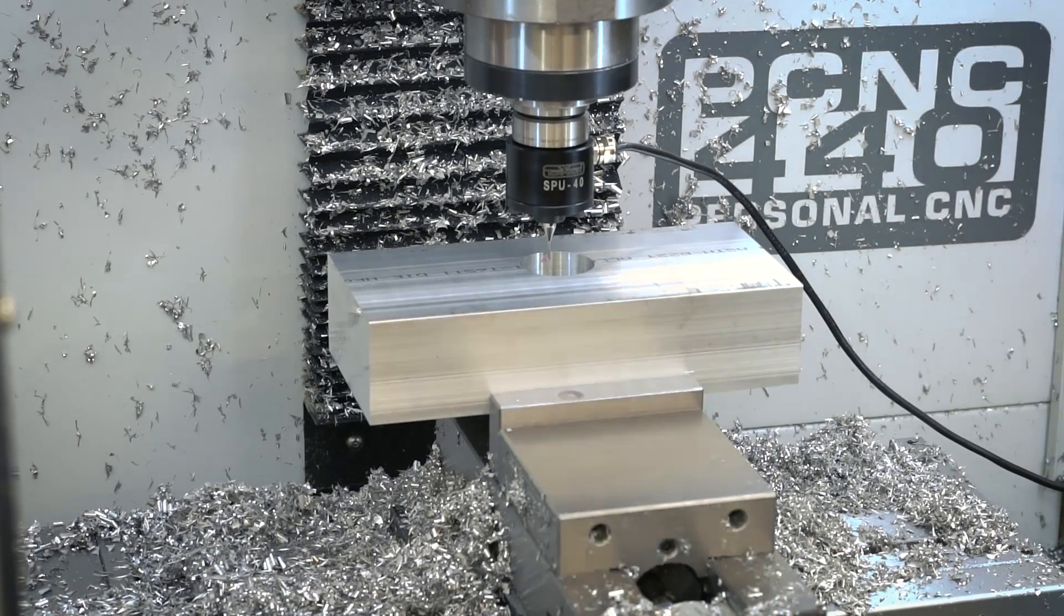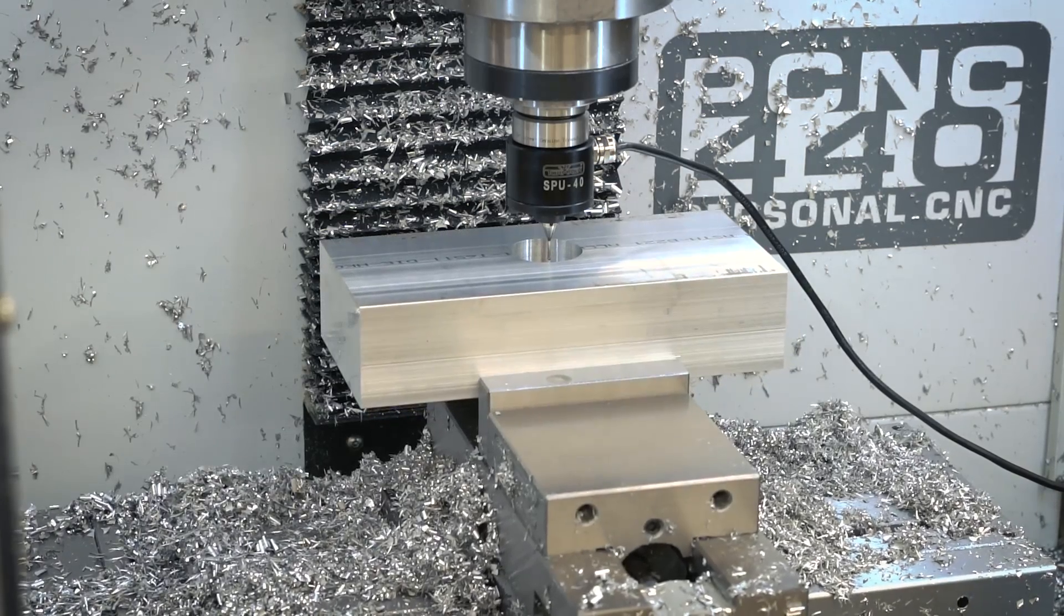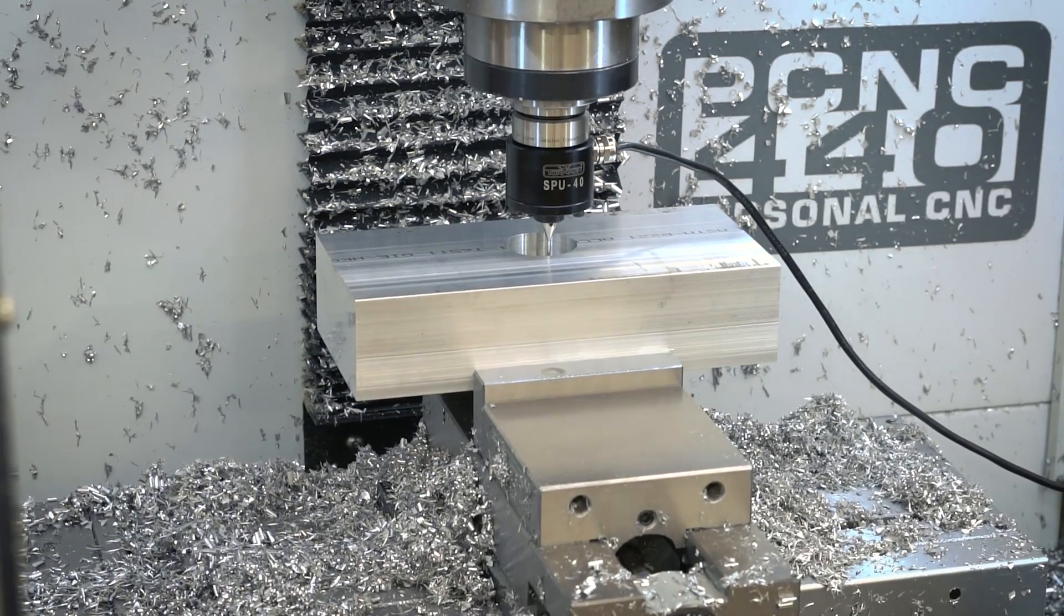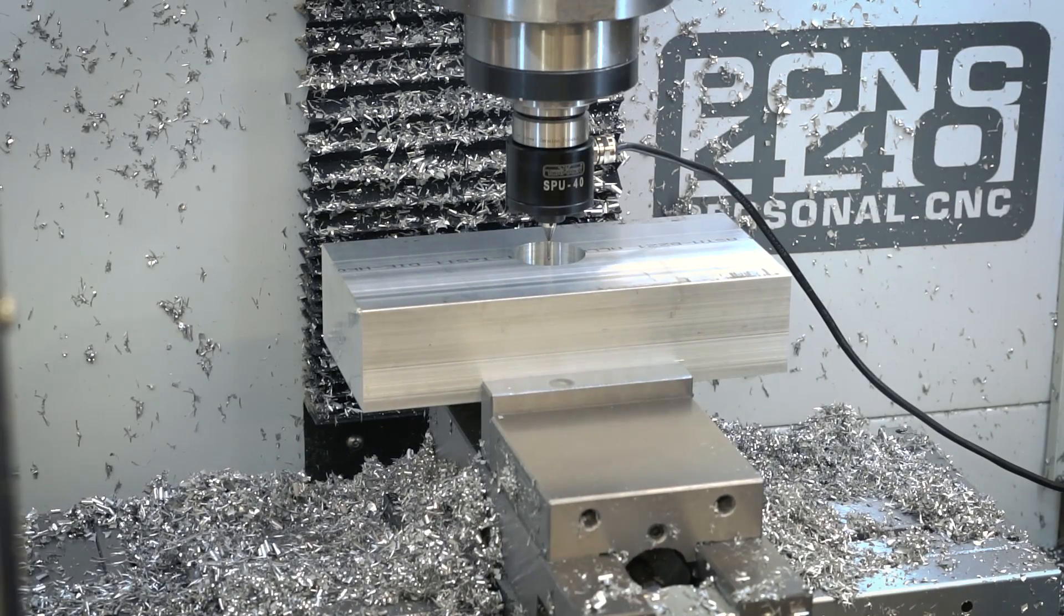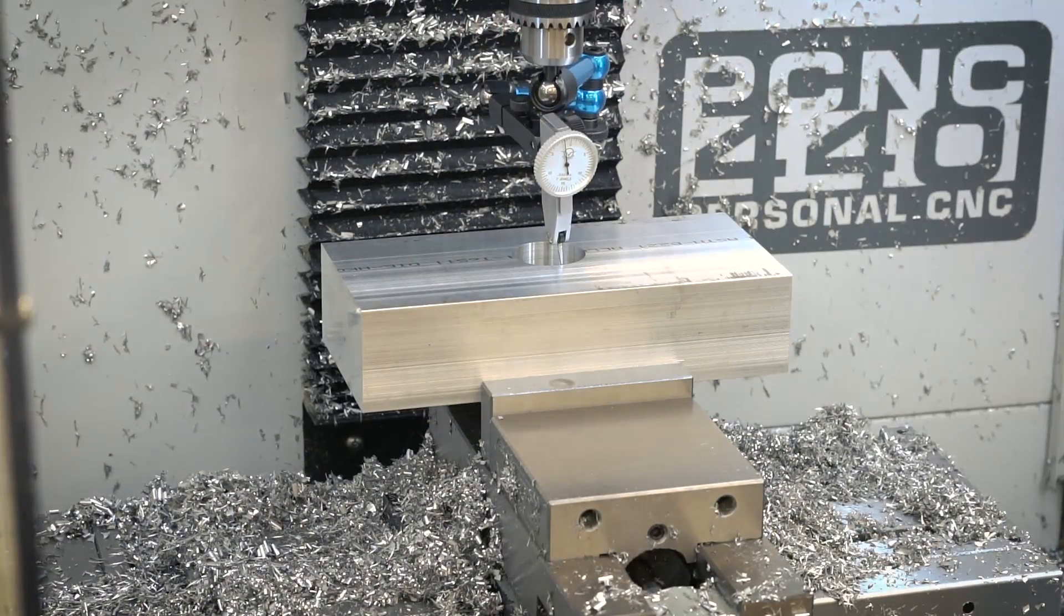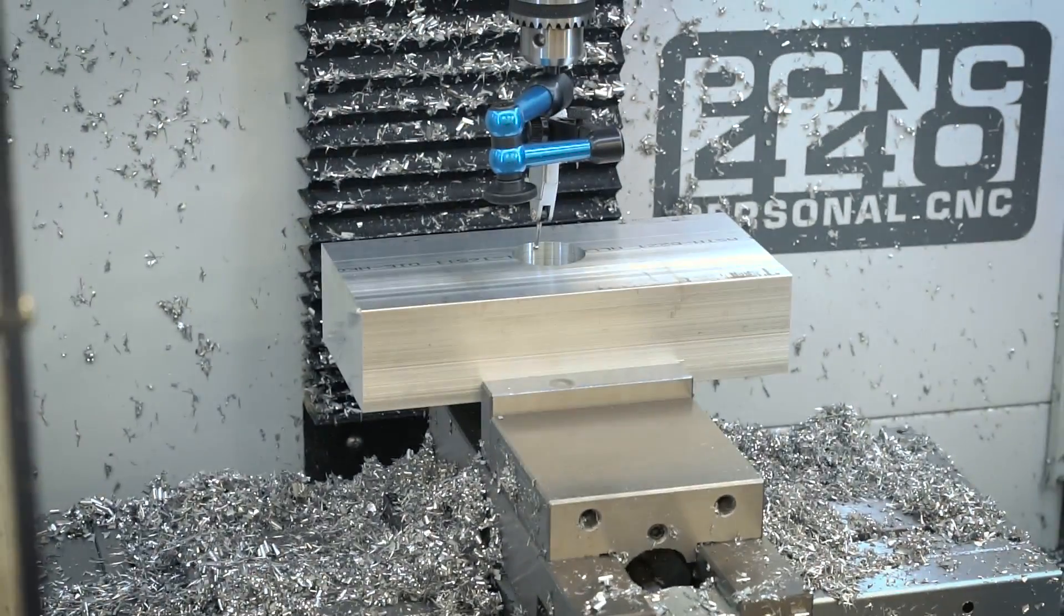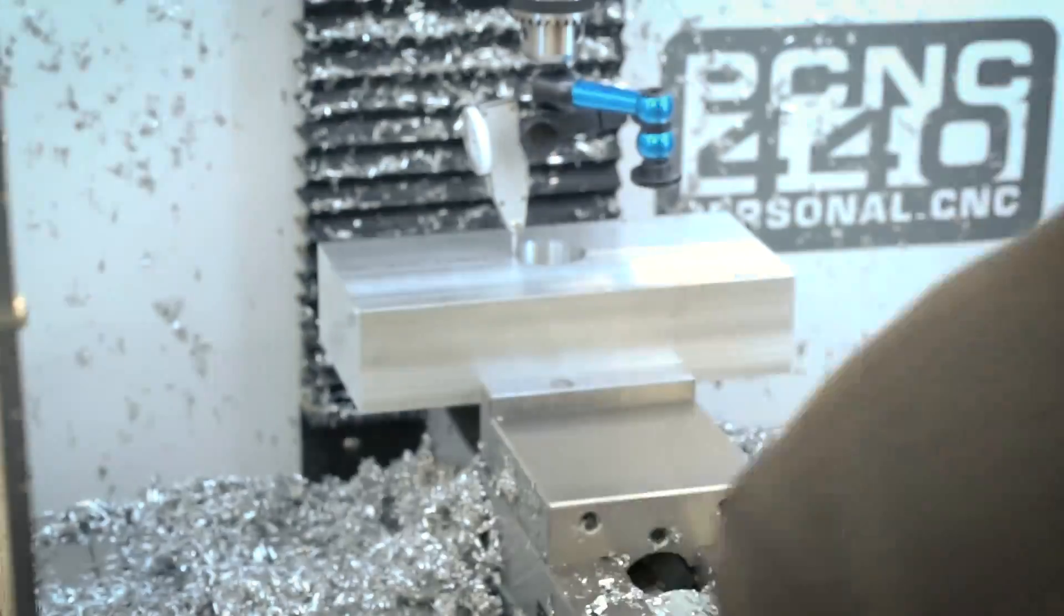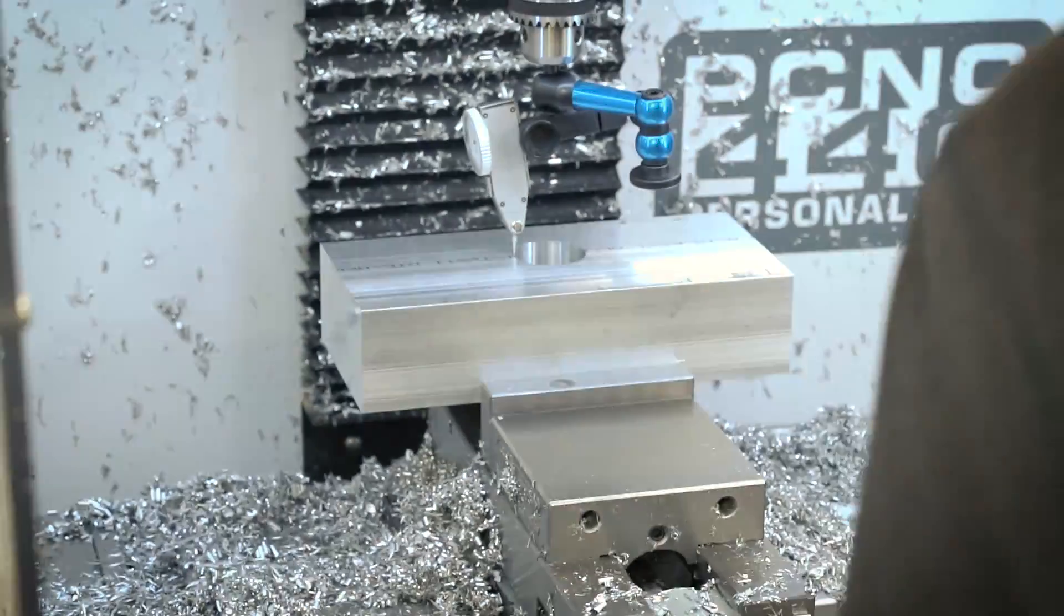When I flip the part over to do all the operations on the other side, I use the passive probe to find the middle of that hole and that was going to be my reference. I also used my dial test indicator mounted into the spindle just to kind of verify that the passive probe was actually finding the center. And I kind of went back and forth a couple times just to verify this because if these were out of alignment, the whole part would be ruined.